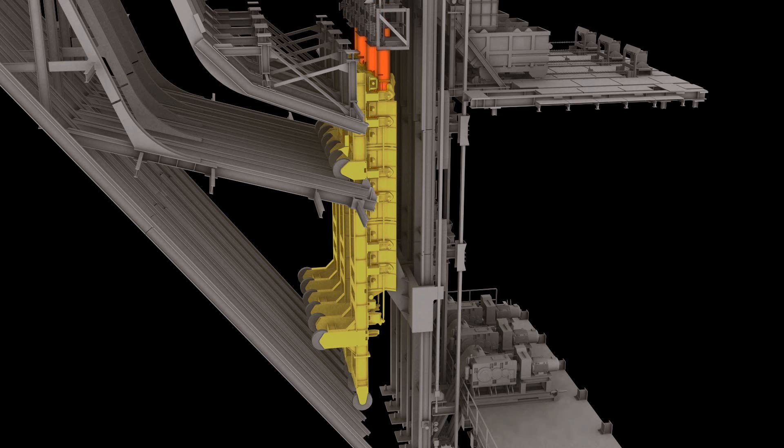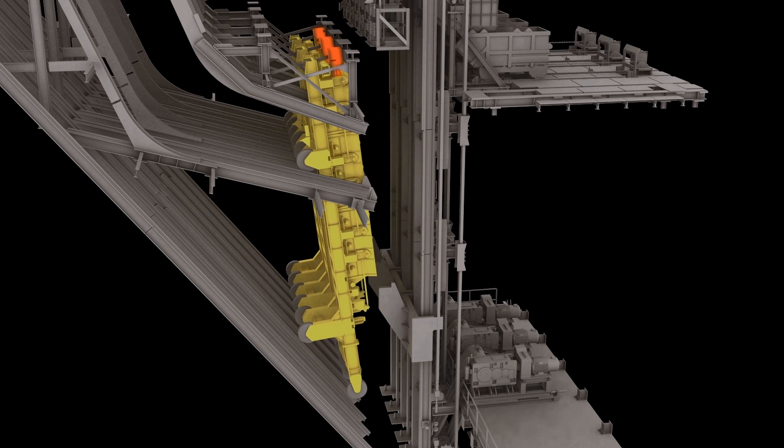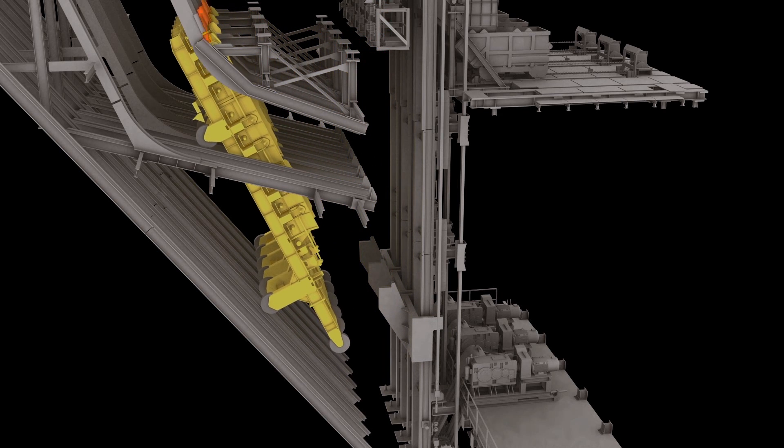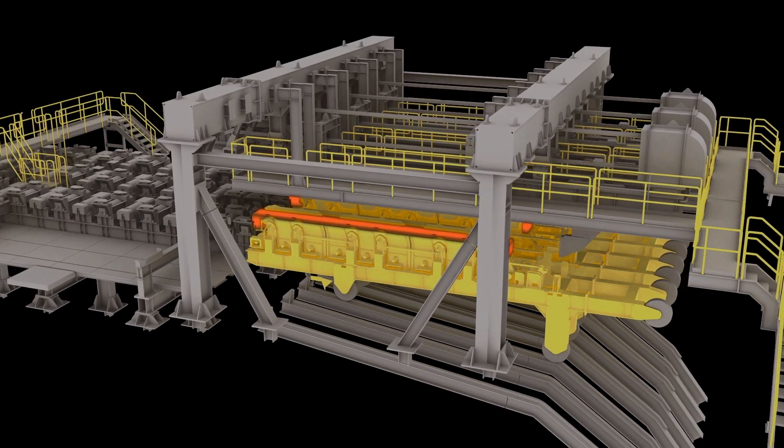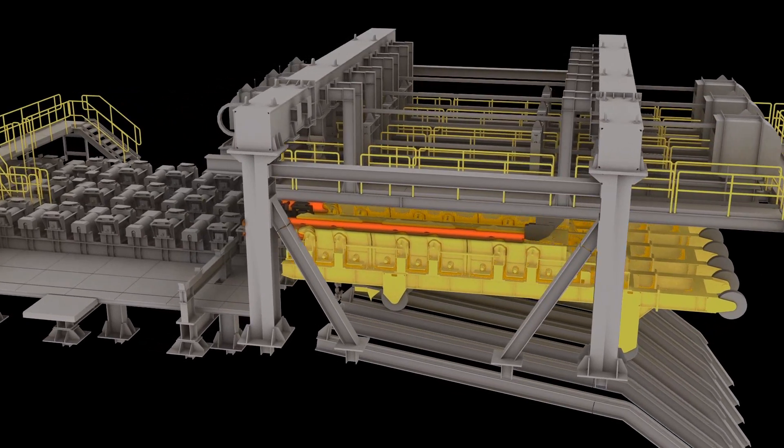After the bloom torch cut, a transportation car receives the bloom, raising it to ground level. A longitudinal pusher moves the bloom off the car and onto the discharge table.